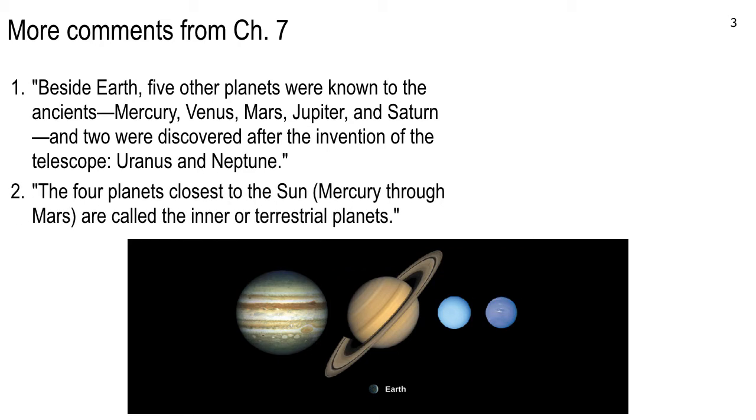The inner four planets are known as the terrestrial planets, so Mercury through Mars. We're going to talk about them today. So that's a vocabulary term, terrestrial or inner planets. And those four planets are definitely different than the outer four planets - Jupiter, Saturn, Neptune, and Uranus.